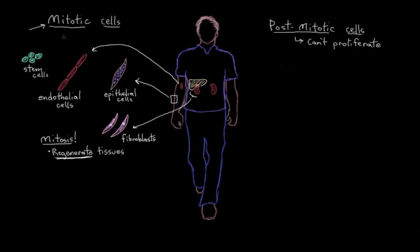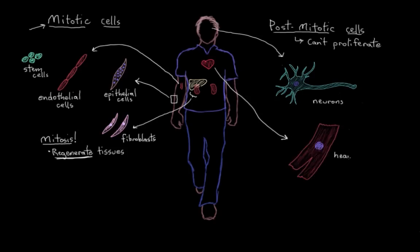Some examples would be neurons, either within the brain or elsewhere in your nervous system, and heart muscle cells. These are both examples of post-mitotic cells.